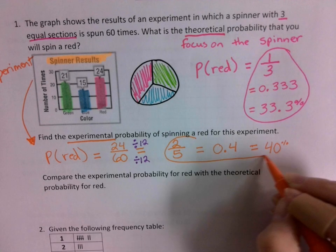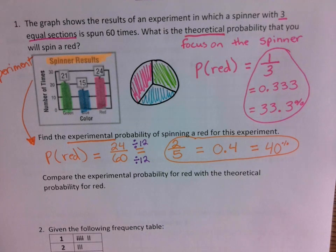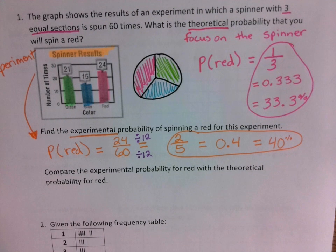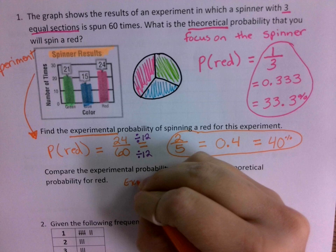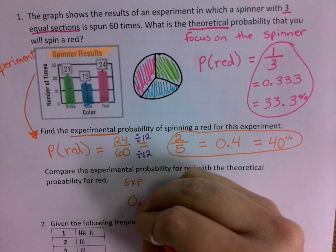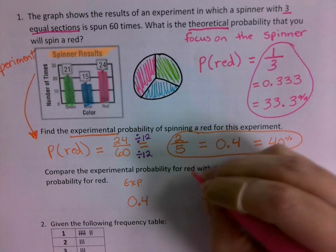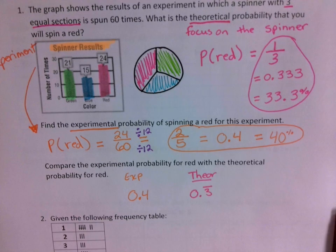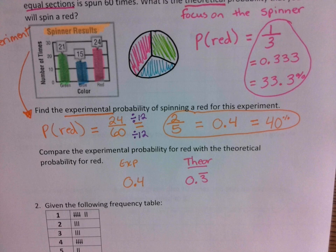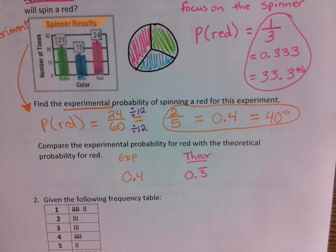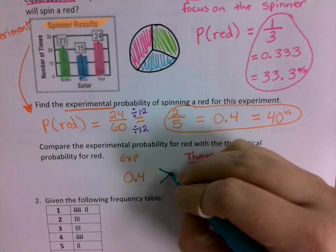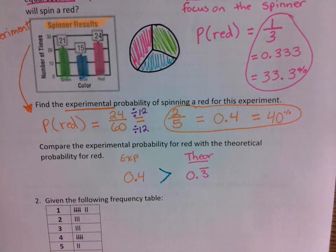Now we need to make a comparison between our experimental and theoretical probability of red. My experimental probability is 0.4, compared to my theoretical probability, which was 0.333 repeating. A comparison means stating which one is bigger: 0.4 is greater than 0.333 repeating.